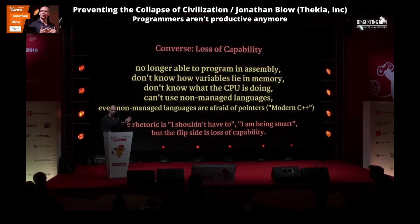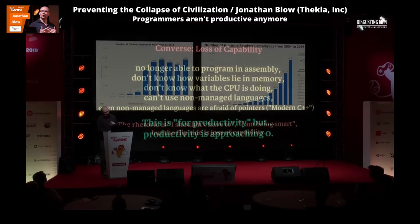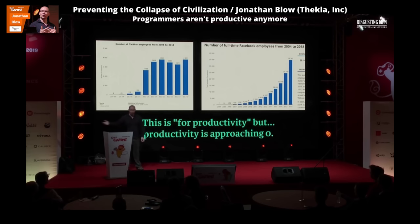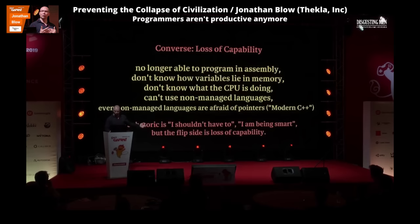Both of those things can be true at the same time. I'm not saying we're not being smart by going up some level — well, a little bit. The point of going up all these levels is supposed to be to make everybody more productive. But programmers are not more productive now than they used to be. In fact, it looks to me like productivity per programmer is approaching zero. And if that's true, then where's the proof that going up this ladder of abstraction further and further is really helping?